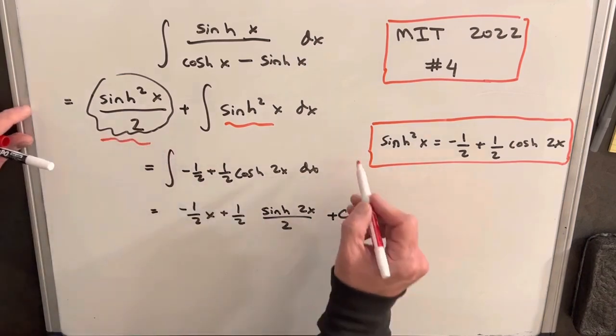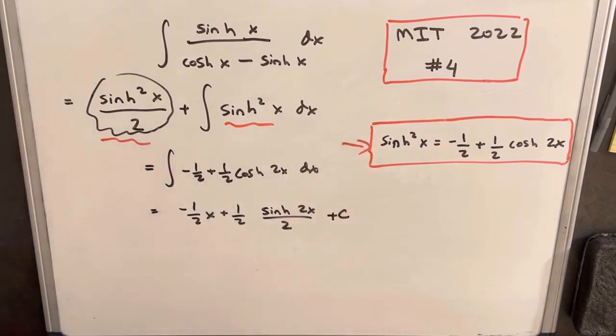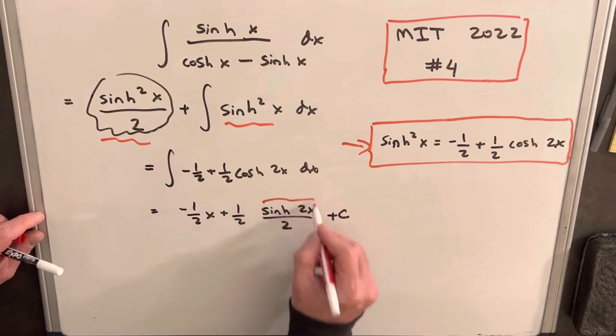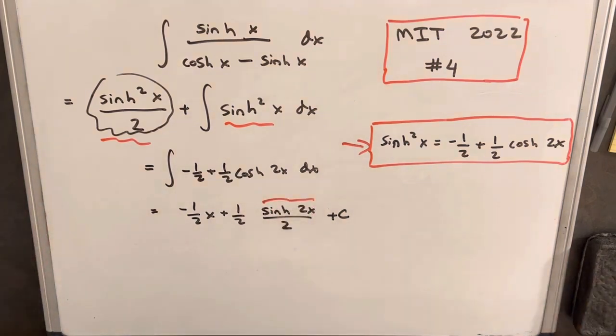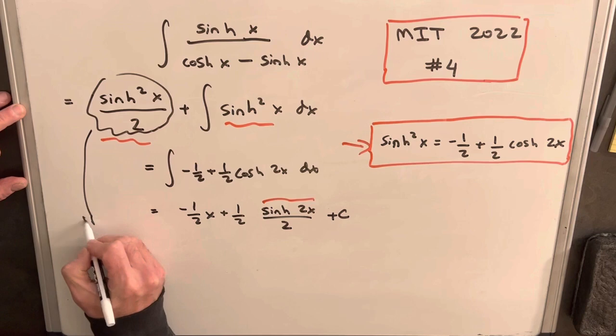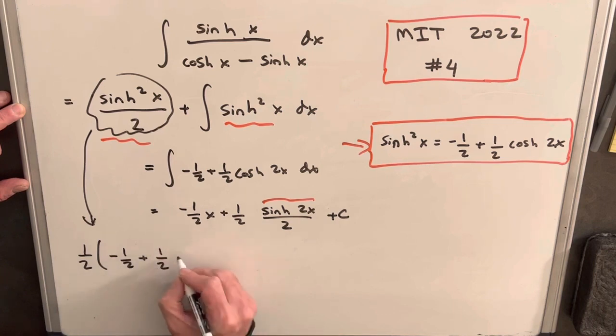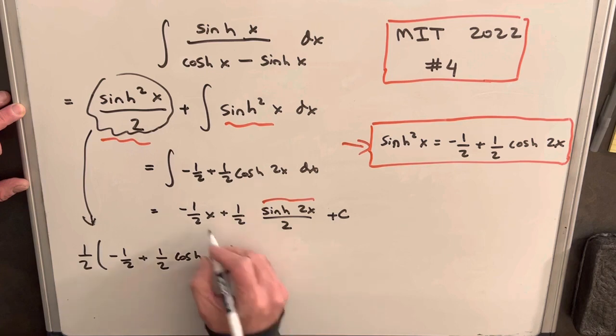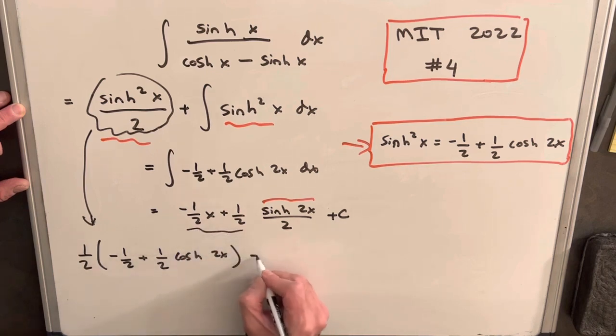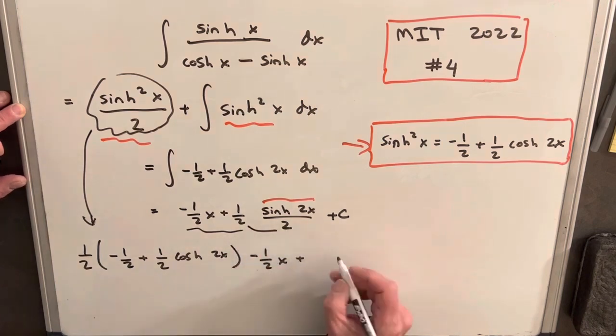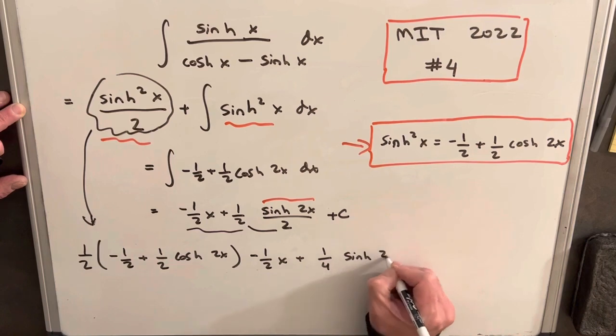So for this, what I'm going to do, I'm actually going to use our power-reducing formula because I want to get it where I can simplify with this piece here. So we'll rewrite this down here. We're going to have, I'll pull out a half, and then we'll just plug in our formula minus 1 half plus 1 half cosh 2x. And then we'll continue with this piece. We're going to have minus 1 half x plus, I'm going to multiply this half times 1 half, and we'll have 1 fourth sinh 2x.